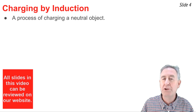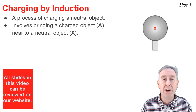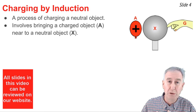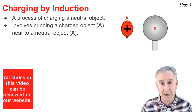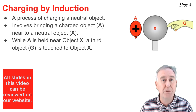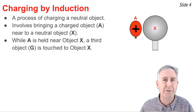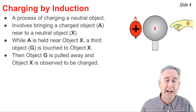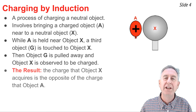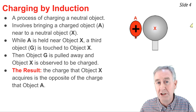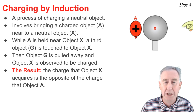Charging by induction is one of several charging methods used to charge a neutral object. The procedure goes like this: you start with a charged object, object A — a positively charged balloon — brought near a neutral object, the gray sphere on an insulating stand, object X. While object A is held near object X, a third object, the finger or hand, object G (where G stands for ground), is touched to object X. Finally, object G is pulled away, and at that point object X has become charged — with a charge opposite to that of object A, so in this case, negatively charged.